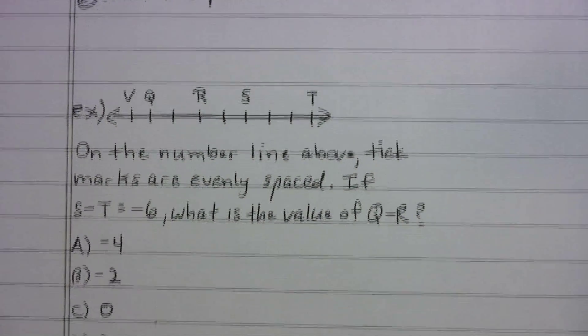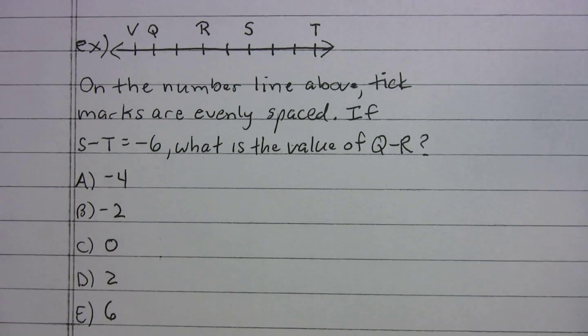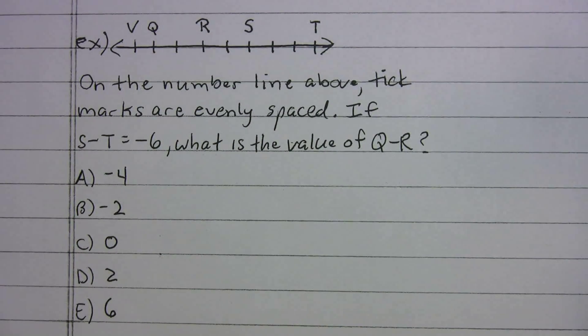Second example. You can pause the video and you can attempt this on your own. I'm going to go into the explanation. So this one says, on the number line above, tick marks are evenly spaced. If s minus t equals negative 6, what is the value of q minus r?